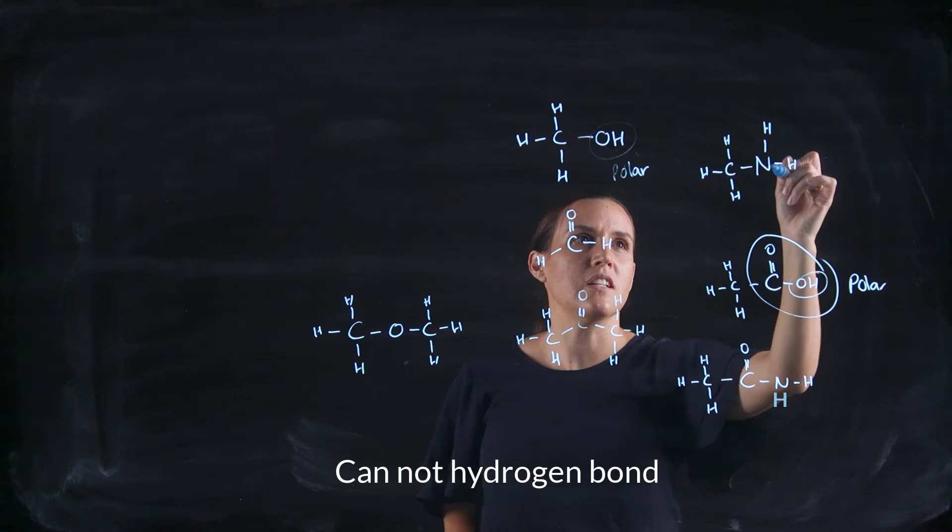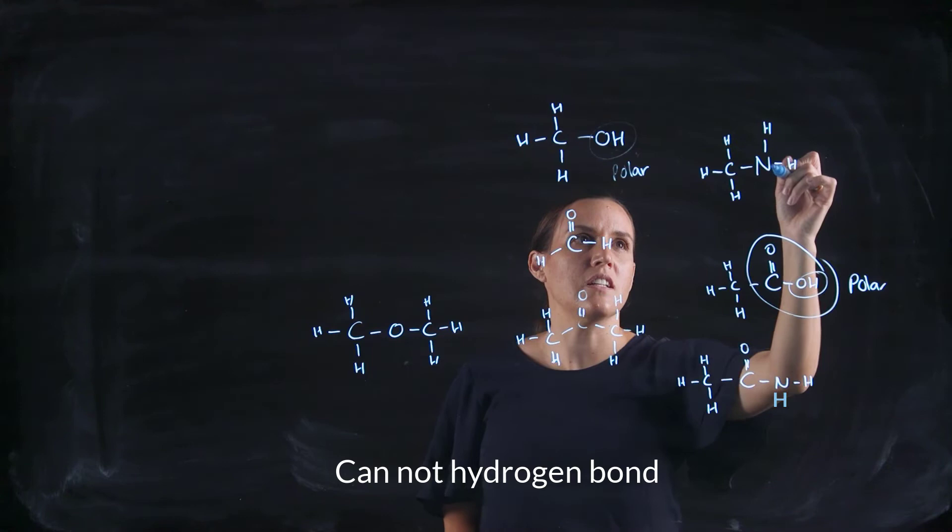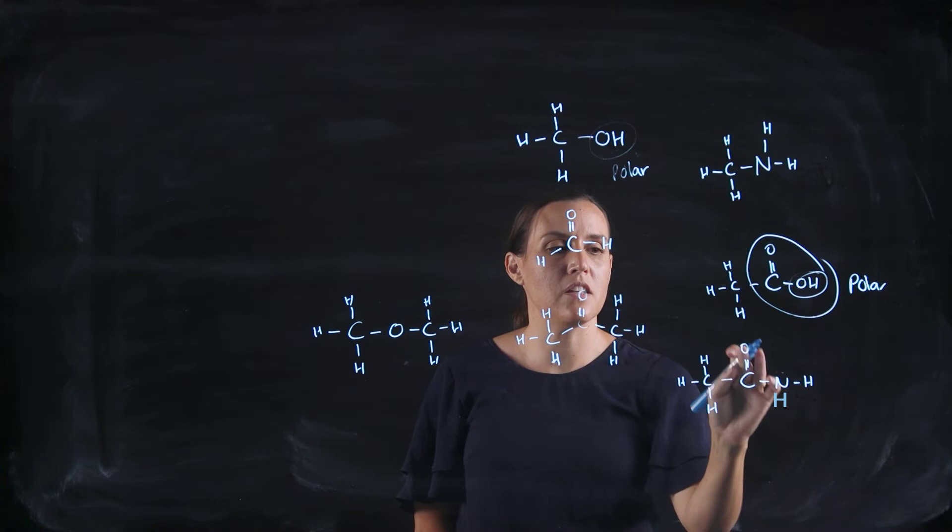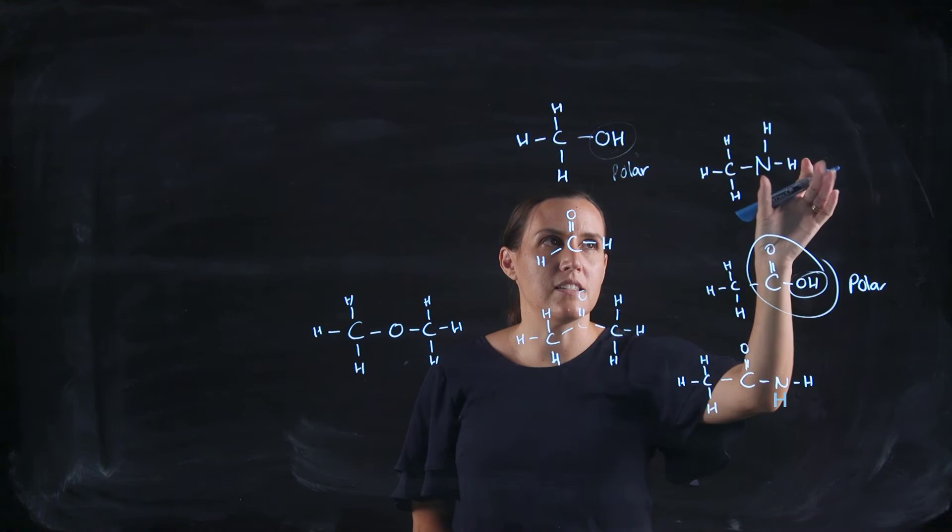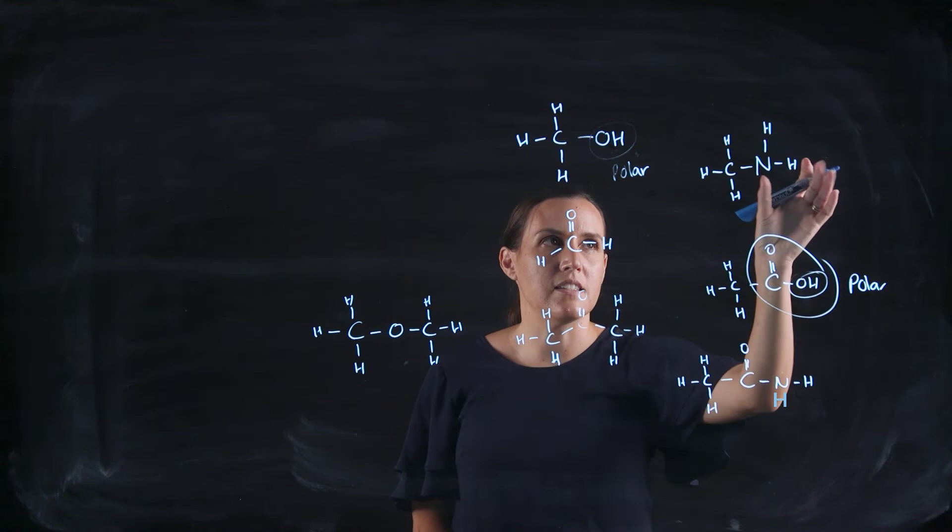Nitrogen is fairly available here, so it would be a little bit polar. And with the amide, the lone pair would be tied up into the carbonyl a little bit, so there'd be a bit of delocalization, so this one here would be a little bit polar but not as polar as the amine.